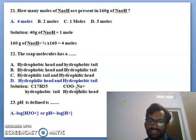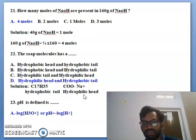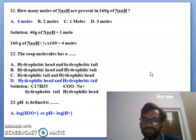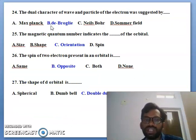The soap molecule has. Soap molecule has hydrophilic head and hydrophobic tail. So you can see the soap molecular formula is C17H35COONa. C17H35, hydrophobic tail and hydrophilic head is COO minus Na. pH is defined as the log H3O or pH equals minus log H plus. You can see the 24th, the dual character of wave or particles of the electron was suggested by De Broglie. De Broglie is the correct answer here.